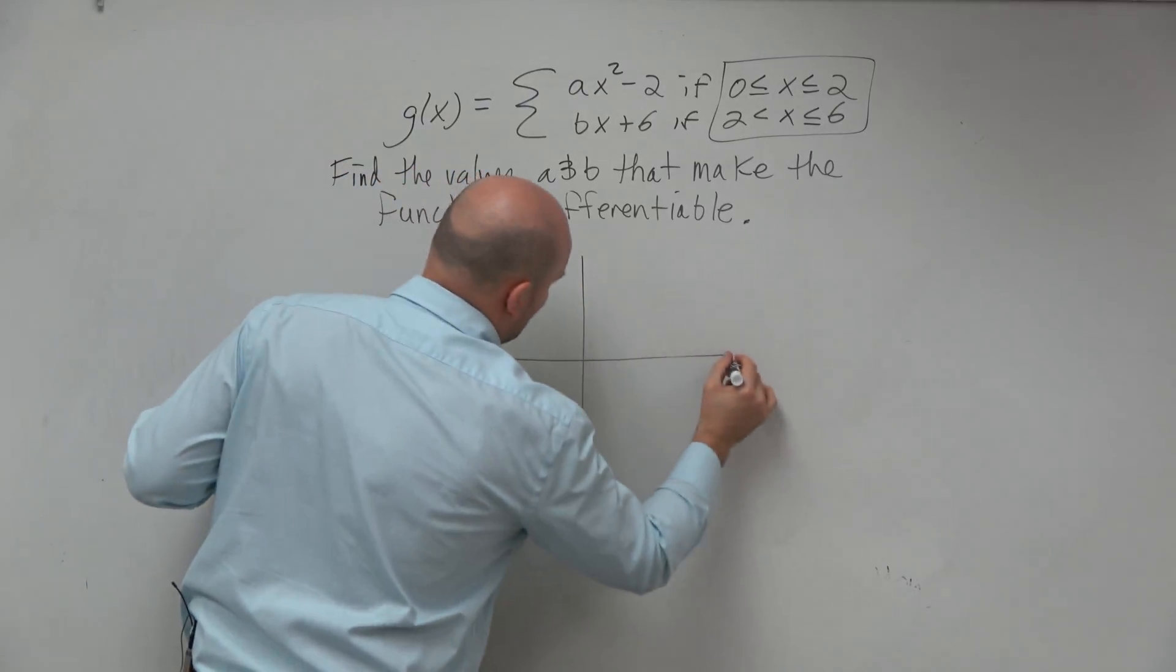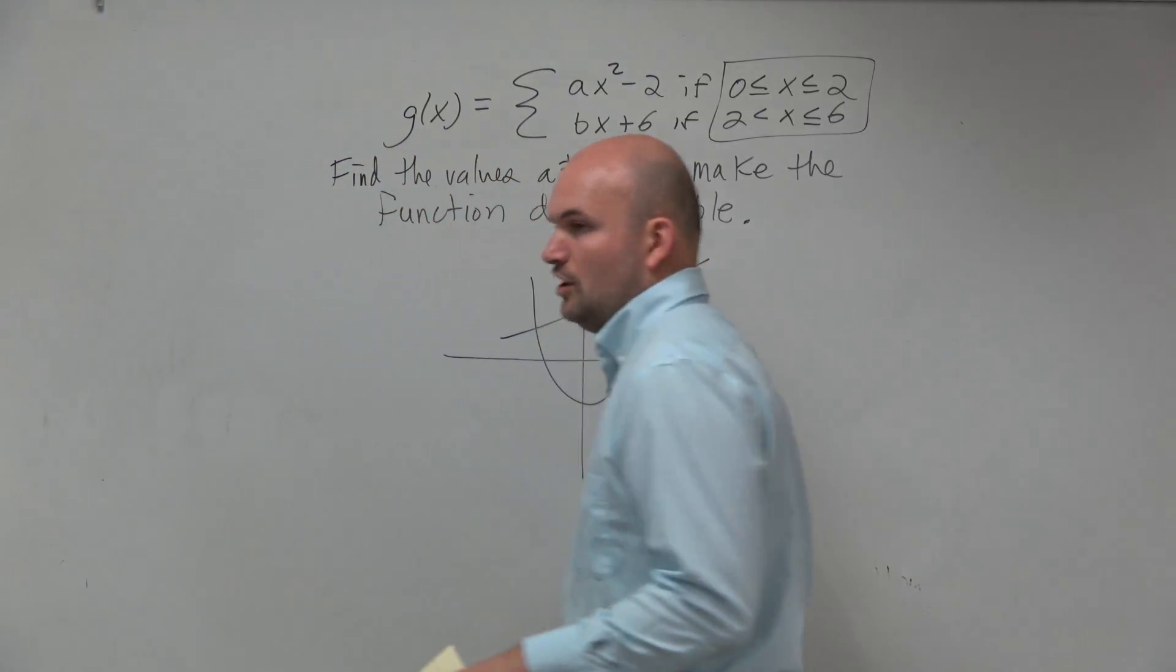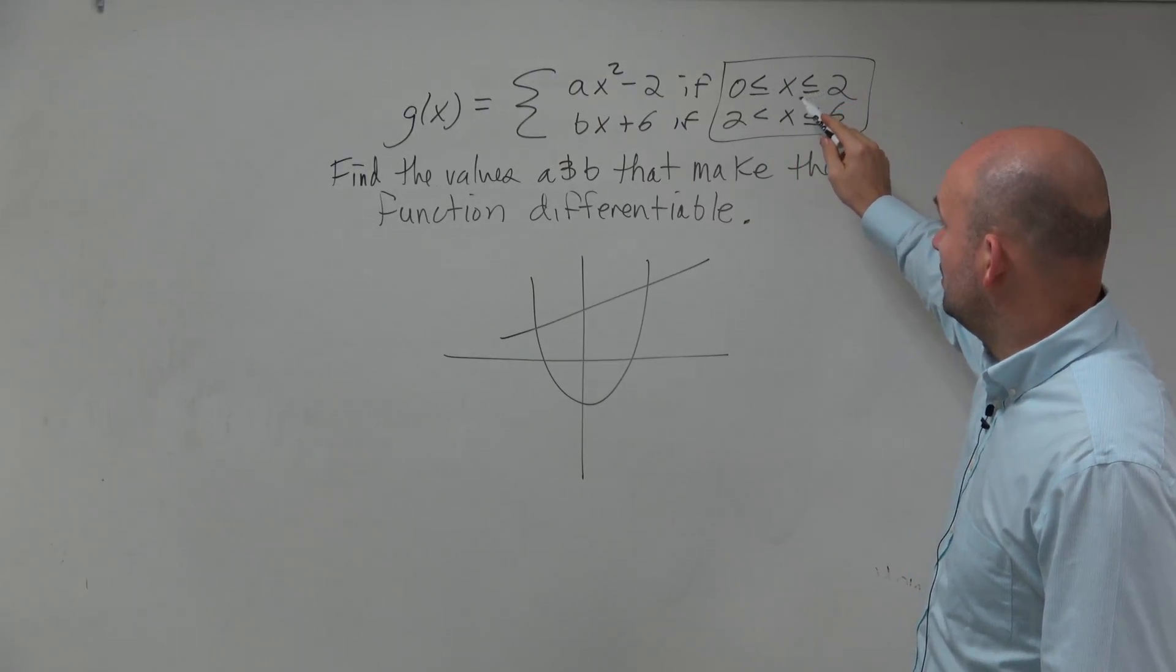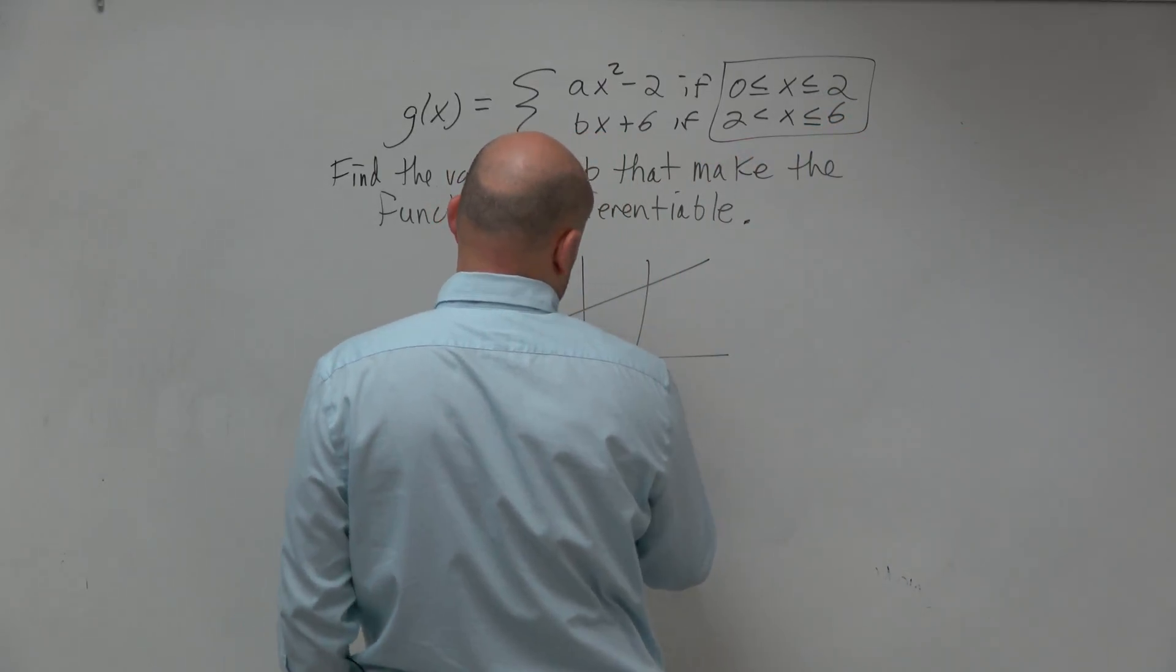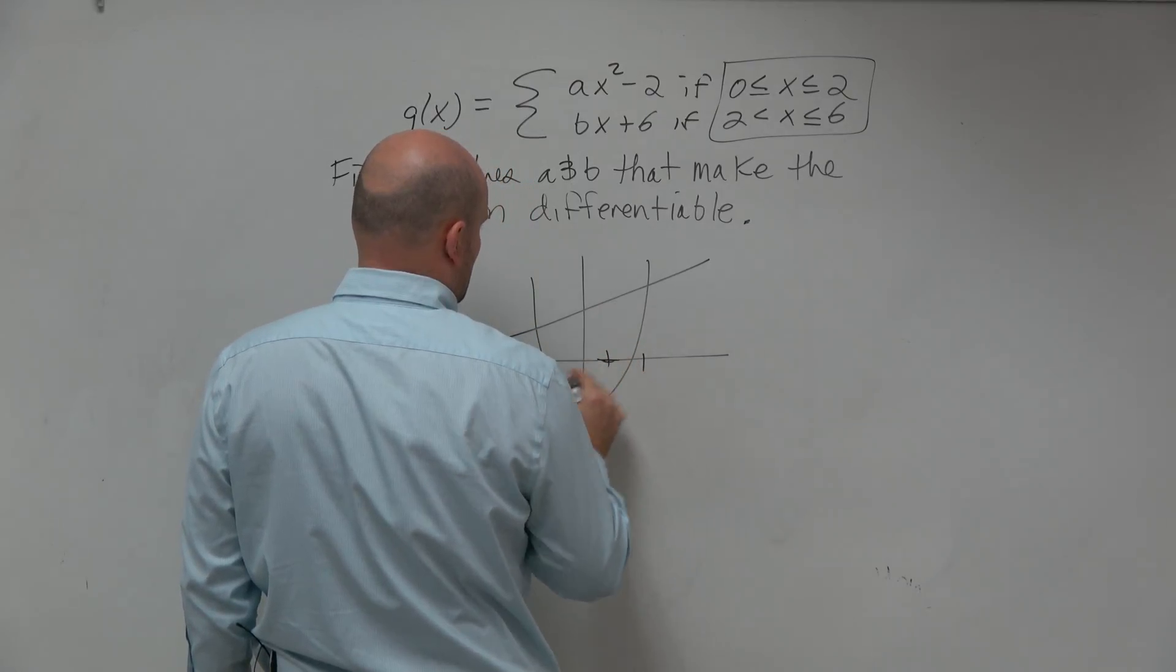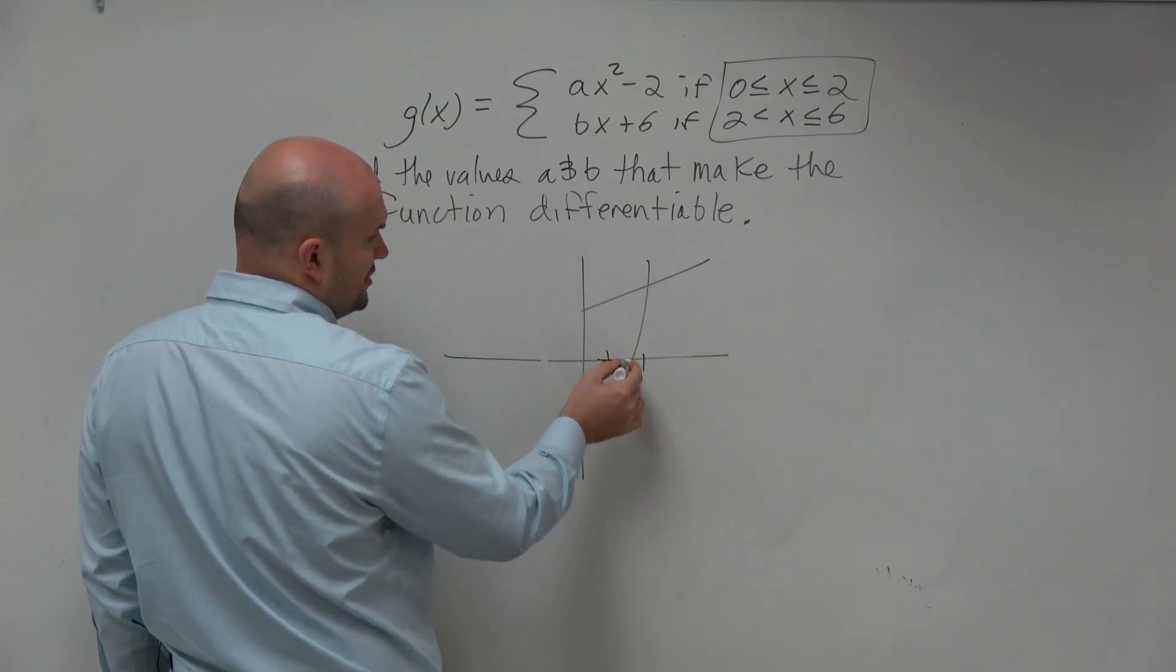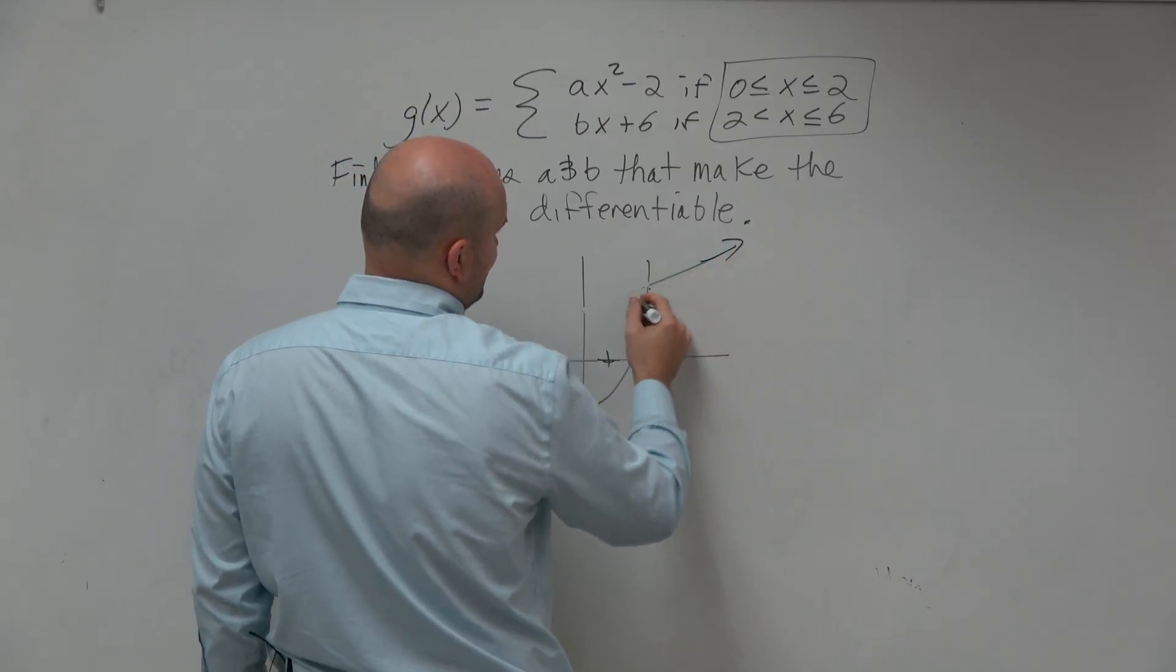So I'm just going to give you guys a visual representation of the graph. It looks something like that, roughly. Now, we know that we're only taking the graph from 0 to 2. We're taking this graph, and let's just pretend 2 is right here. So everything to the left of 0 is basically not a part of this graph. So from 0 to 2, we're going this graph, and then from 2 to 6, we have this graph.